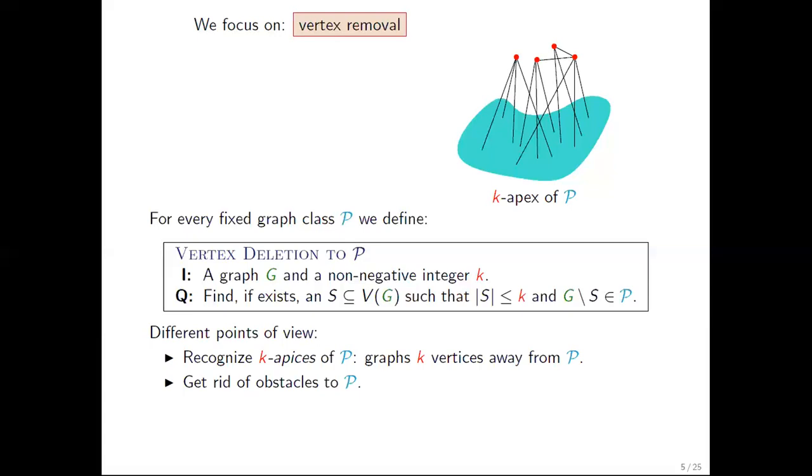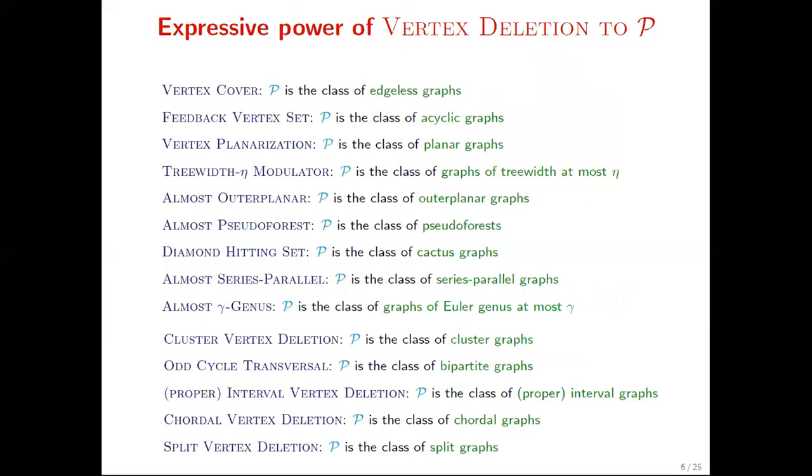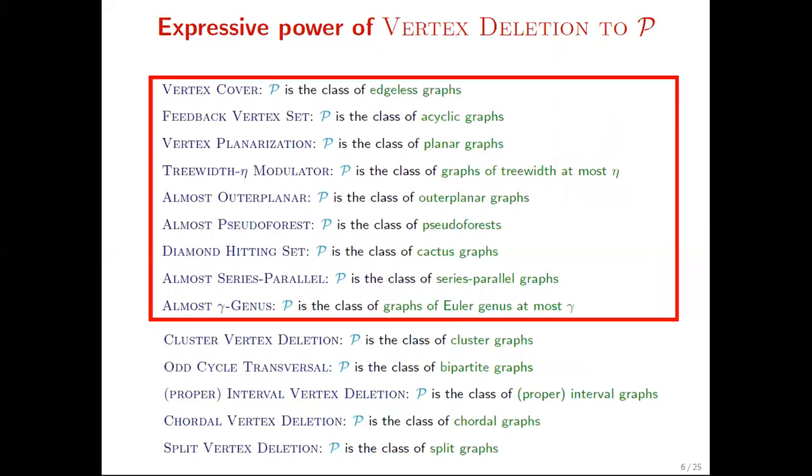This problem does not describe only a specific problem, but whole families of problems for different choices of target properties. In this sense, it is a meta problem. Here we can see a list of problems spanned by this framework for different choices of P. Most of them are well-known problems, and in our results, we provide efficient algorithms solving quite many of them.